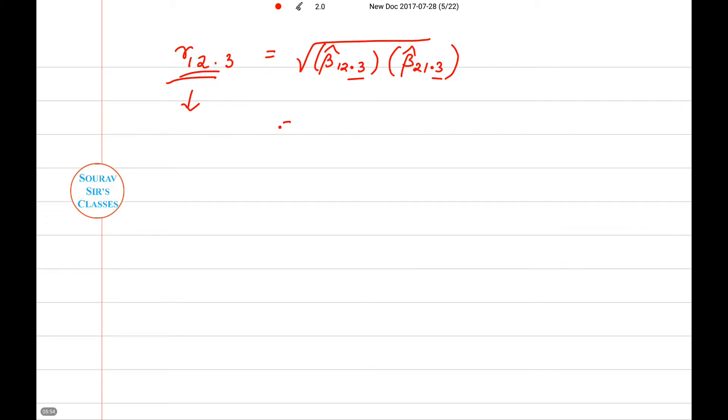So this will be square root of (λ₂/λ₁) × (λ₁/λ₂), and then we will get plus or minus 1. Similarly, if we repeat this thing for all the cases, we will get the same value.